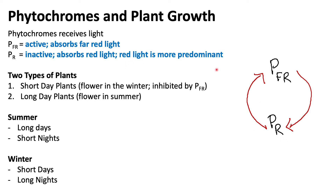Since we have predominantly red light during the day, we will see an increase in phytochrome far red compared to phytochrome red, because this conversion process is occurring more frequently due to the predominance of red light.